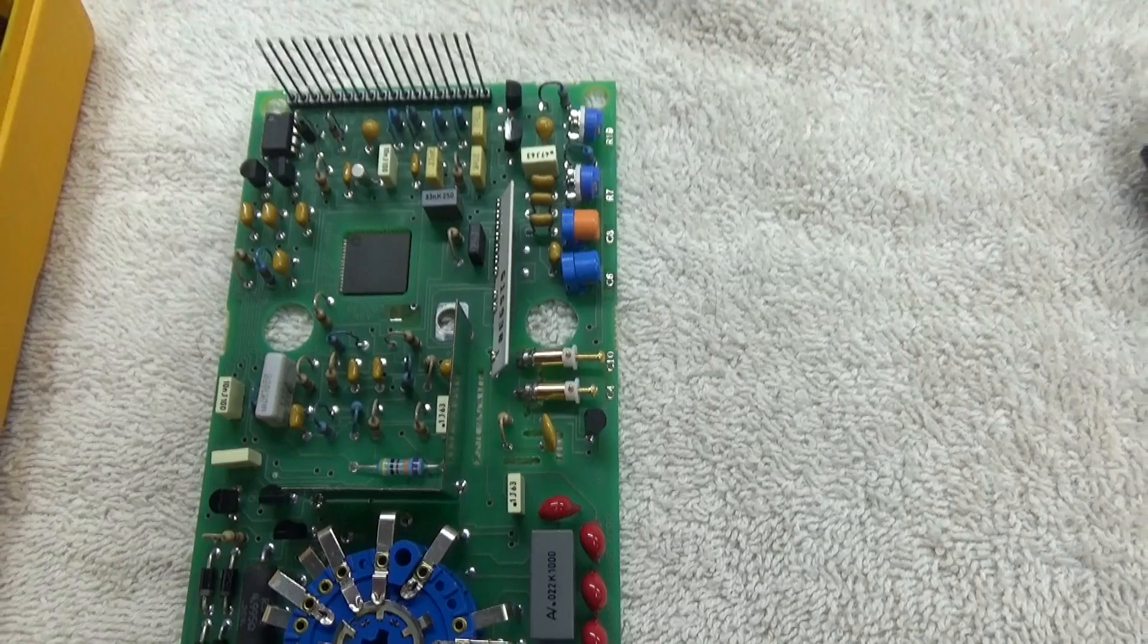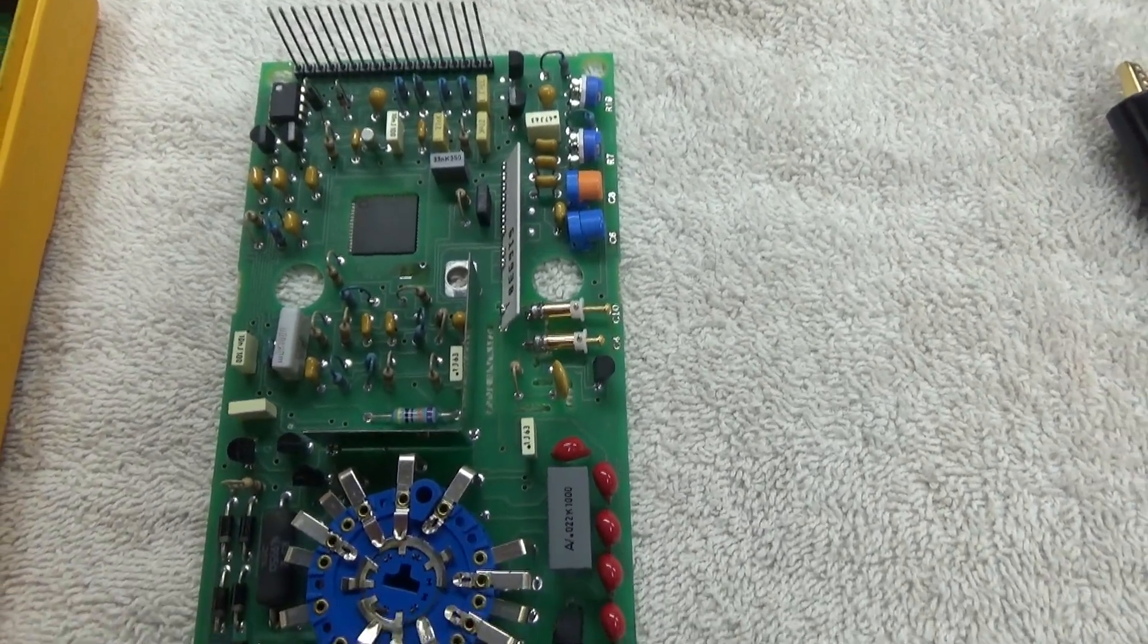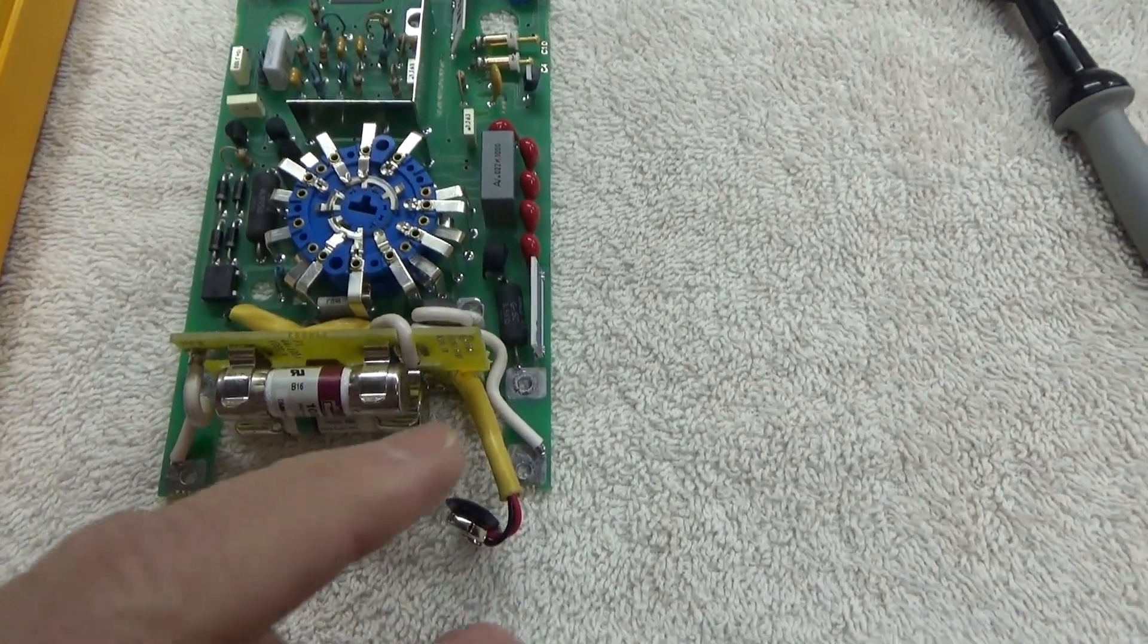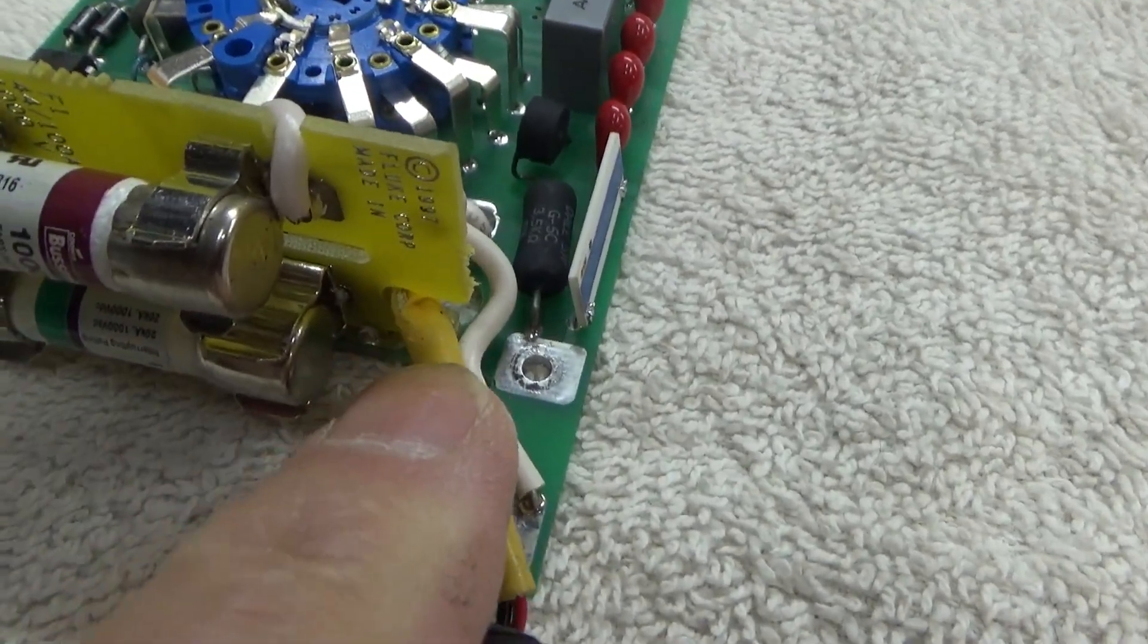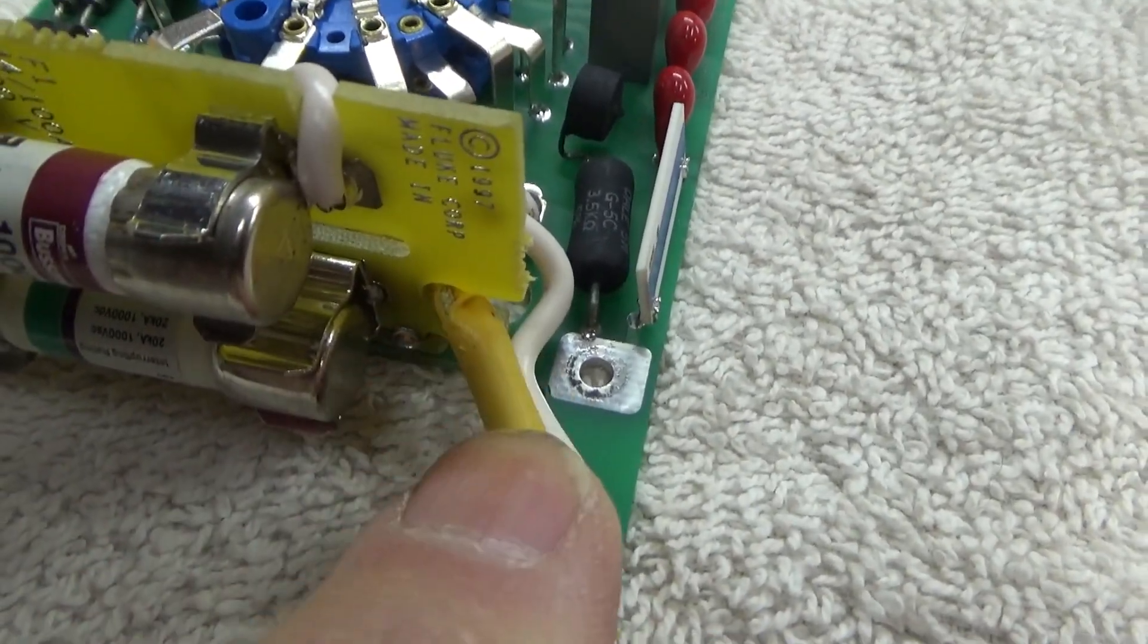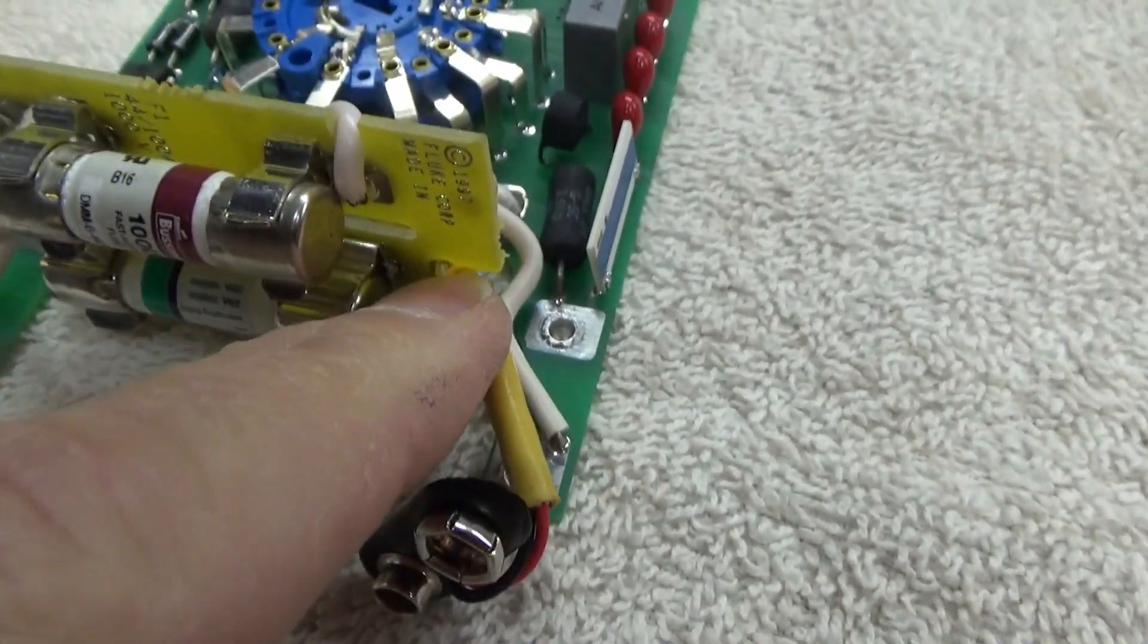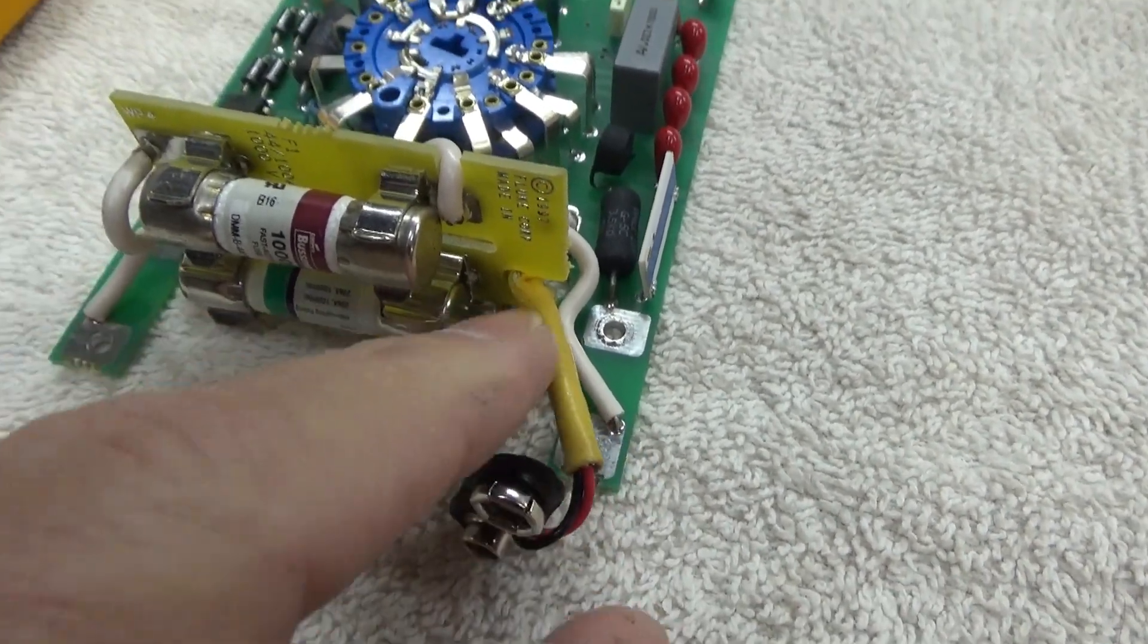Okay, got it apart and I don't really see too much, nothing's really burned up or anything. Now I'm referencing Dave Jones from EEVblog teardown video of this and kind of comparing his to mine. First of all, that little teeny scrape right there, that's just on the power cord, that's not cutting into the power lead itself.